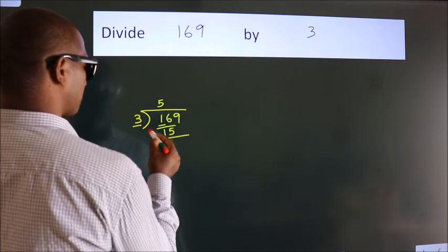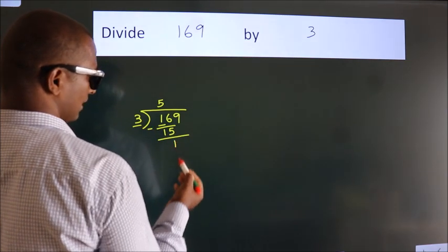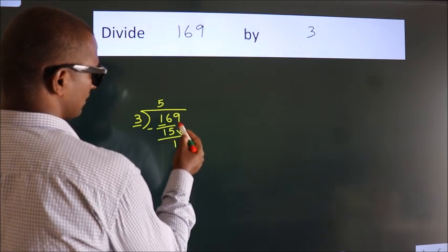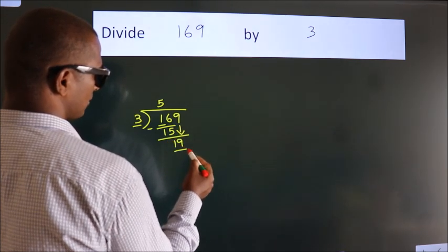Now we should subtract. We get 1. After this, bring down the beside number. So 9 down. So 19.